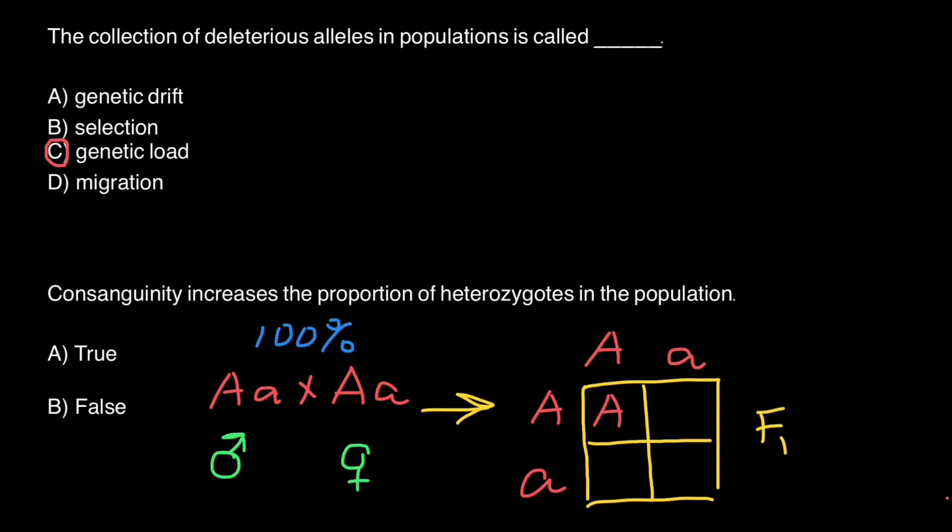Capital A, capital A here. Capital A, small a here. Capital A, small a here, and small a, small a here. We start with a population where 100% of the loci were heterozygous, and we end with a population, an F1 generation, where only 50% are heterozygous.